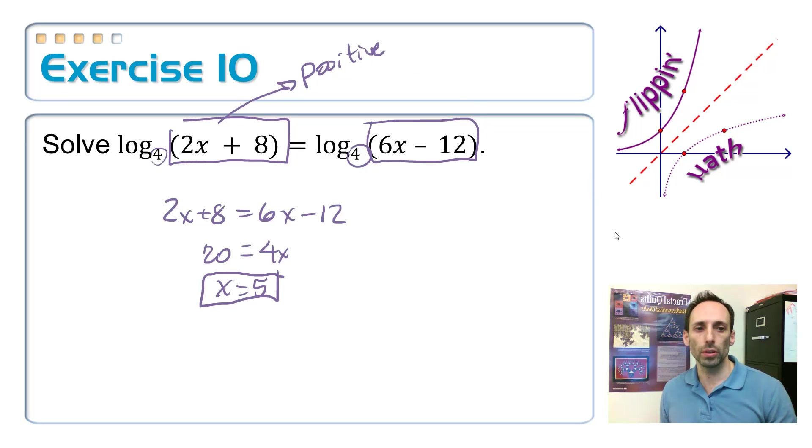Because whenever you go to graph a logarithm, look at the flipping math logo right over here, right up above my head. The dashed graph right there, it never goes to the negative side. So, what that means is that what's inside there must always be positive. Is 5 going to keep this side positive and this side positive? And yes, it is.